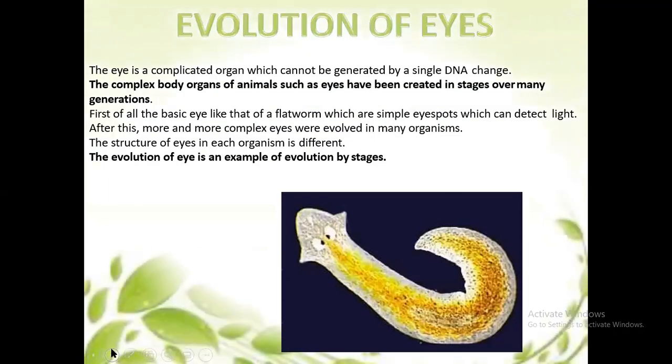Evolution of the eye. The eye is a complicated organ which cannot be generated by a single DNA gene. Complex body organs such as the eye have been created in stages over many generations. First, the basic eye like that of a flatworm — a simple eye spot which can detect only light. After this, more and more complex eyes evolved in many organisms. The structure of the eye in each organism is different, and this is an example of evolution in stages.